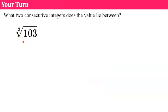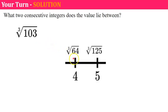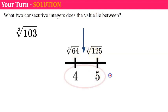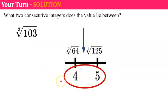Your turn again — what two consecutive integers does this value lie between? Please pause and come back when you're ready. Welcome back. Using my number line of perfect cubes, the cube root of 103 will fall between the cube root of 64 and the cube root of 125, telling me that this cube root lies between the integers 4 and 5.